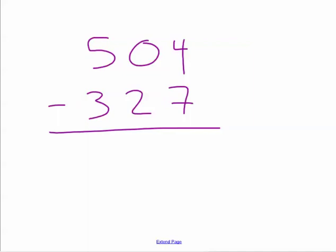Additionally, if I had 504 minus 327, again I would begin in the ones column. But I cannot take 7 ones away from 4 ones—I can't do 4 minus 7. And I can't borrow from the 0 in the tens column.